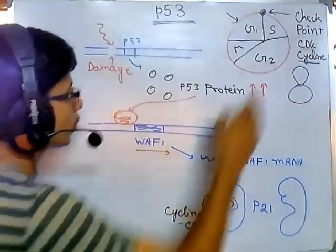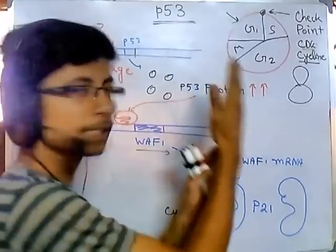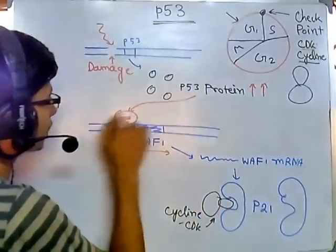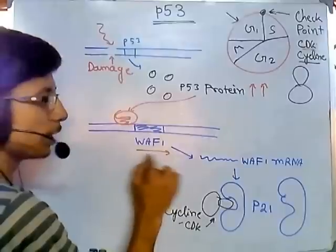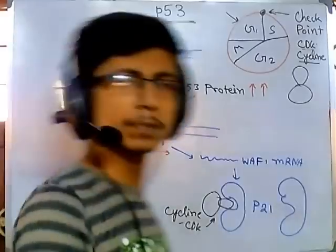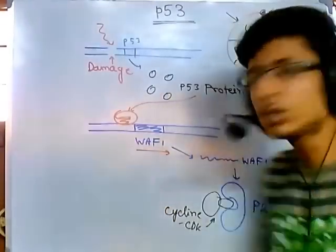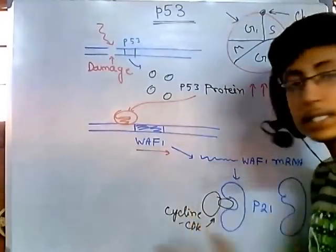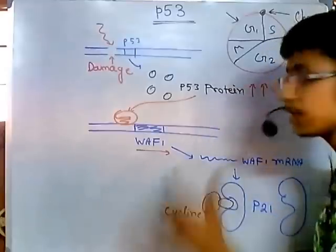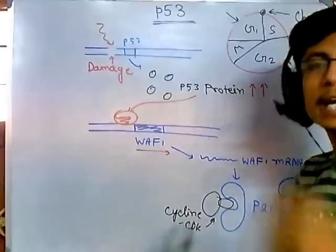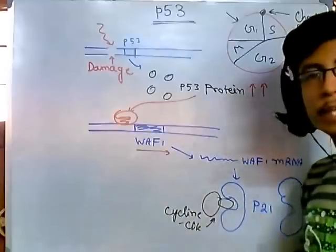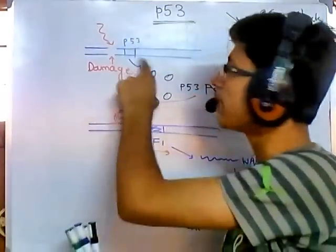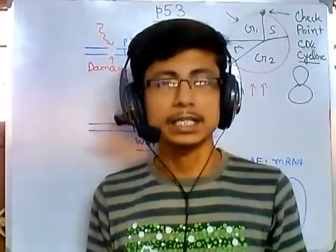Blocking the cyclin-CDK is one pathway. Additionally, p53 activates many other genes in the same way it activates WAF1. Activating those genes ultimately leads to kinase gene activation; those kinase proteins will cause phosphorylation of various cell proteins and ultimately trigger apoptosis or programmed cell death, so the cell with damaged DNA finally dies to prevent any mutation or cancer.